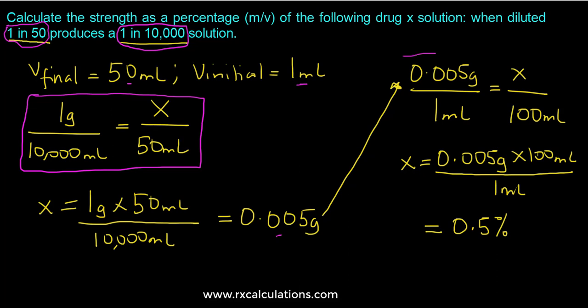We set up another proportion where we have 0.005 grams in 1 ml so what would be in 100 ml to give us our percentage strength. Okay and we would end up with 0.05.